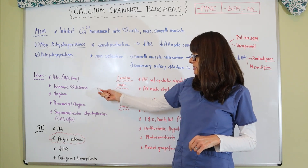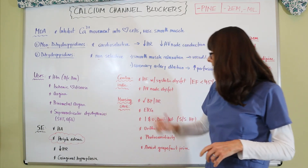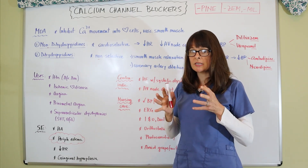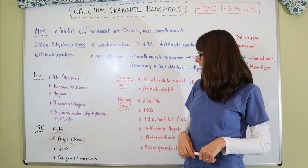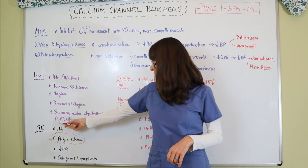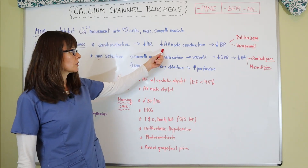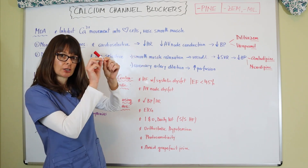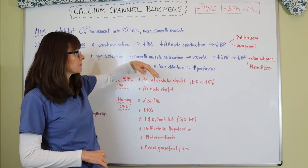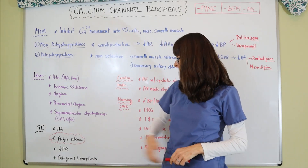They're also indicated for ischemic heart disease and angina — specifically Prinzmetal's angina, which is the variant angina — because they cause coronary artery dilation. Angina is caused by narrowed coronary arteries or spasm, as in Prinzmetal's angina. Calcium channel blockers are also used for supraventricular dysrhythmias such as SVT and atrial fibrillation, because they slow conduction through the AV node, which sits between the atria and ventricles.